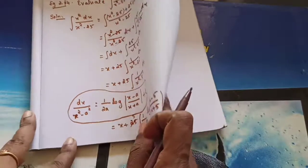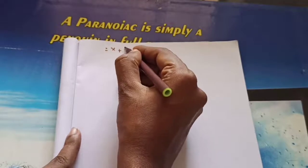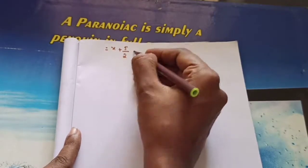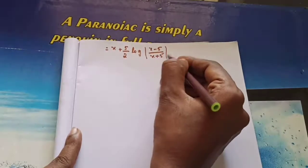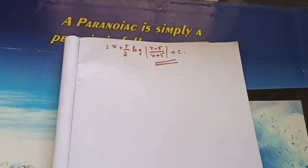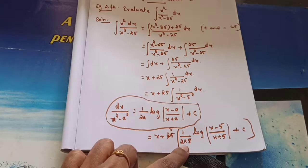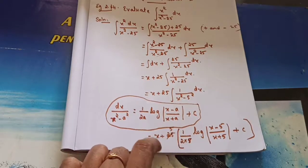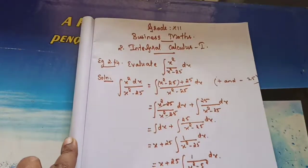So the answer is: x plus (5/2) log|(x minus 5)/(x plus 5)| plus C. Got it, children? Very easy. When substituting the formula you want to be very careful. Here this 5 cancelled with 25 to give 5/2. This is Example 2.44. Let's move to the next.